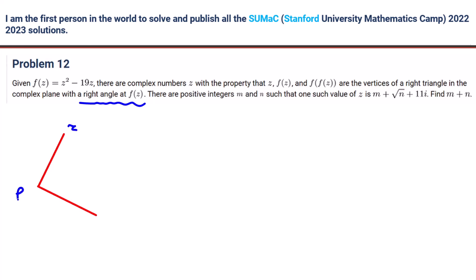So we have Z, F(Z), F(F(Z)), and this one is perpendicular. F(F(Z)) times a 90-degree angle, which would be e^(iπ/2). So let's consider this vector as W1 and this one as W2. W1 is Z minus F(Z), right?